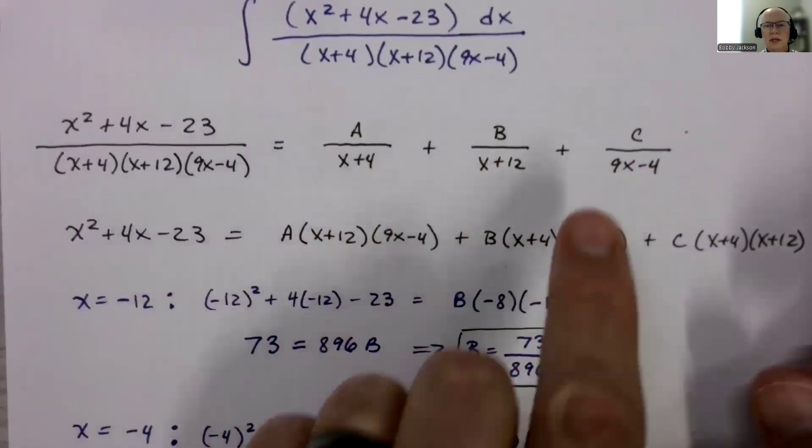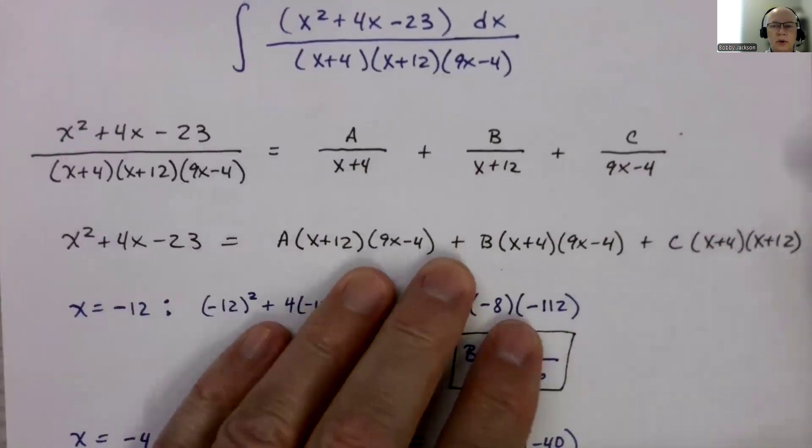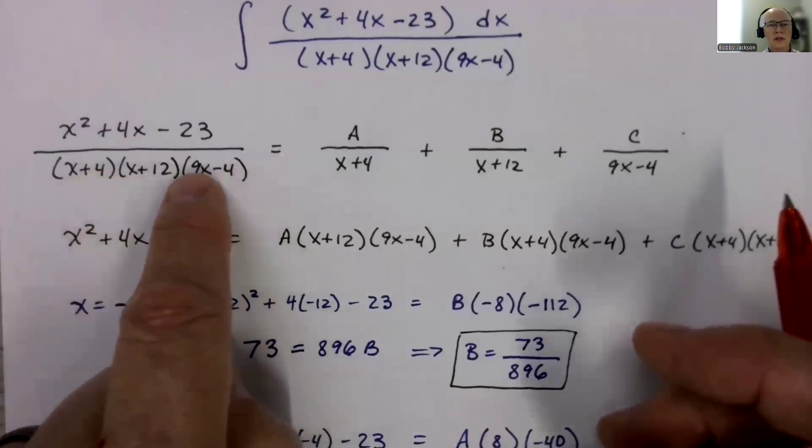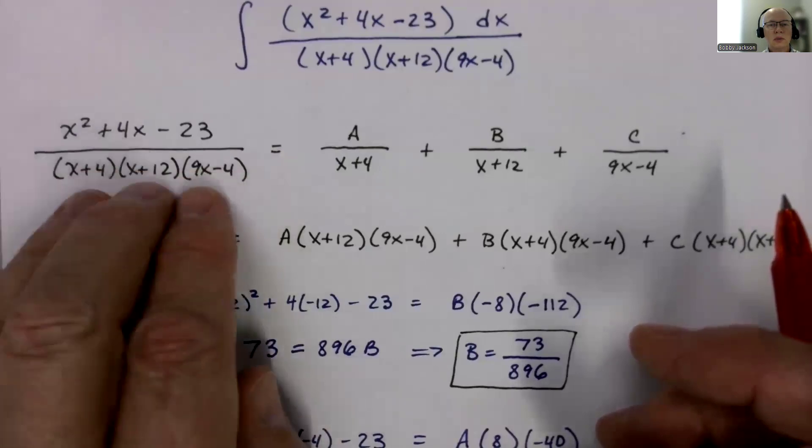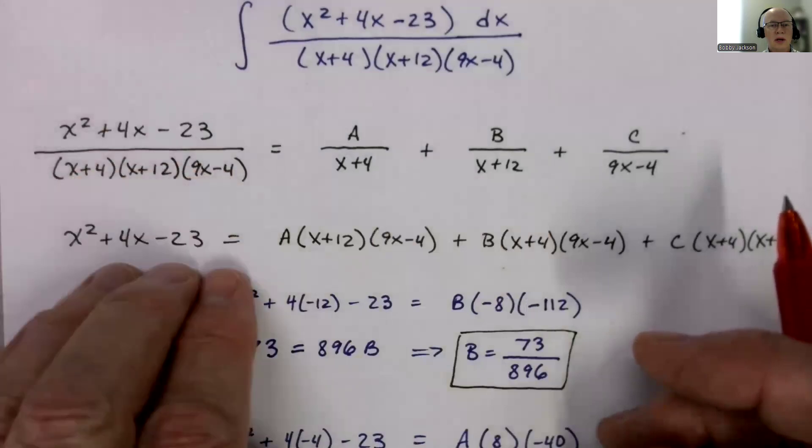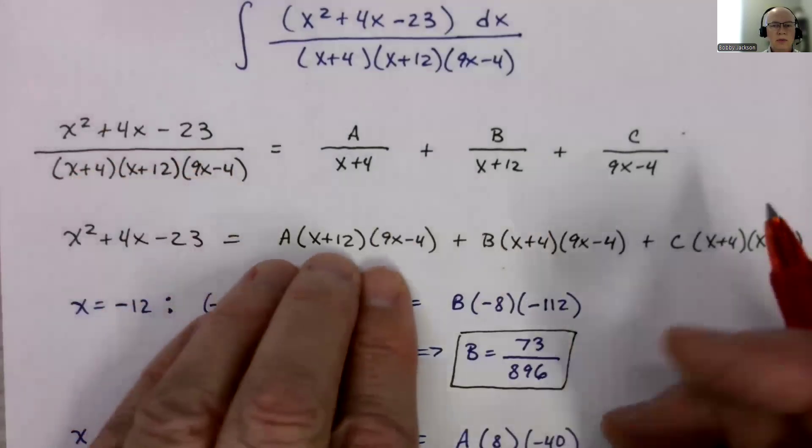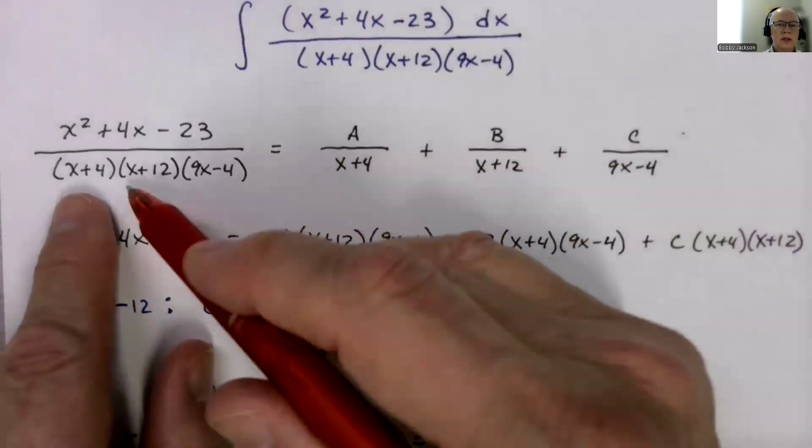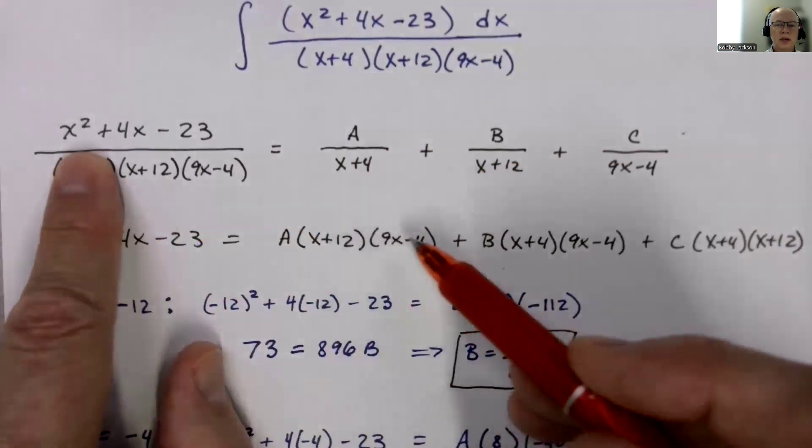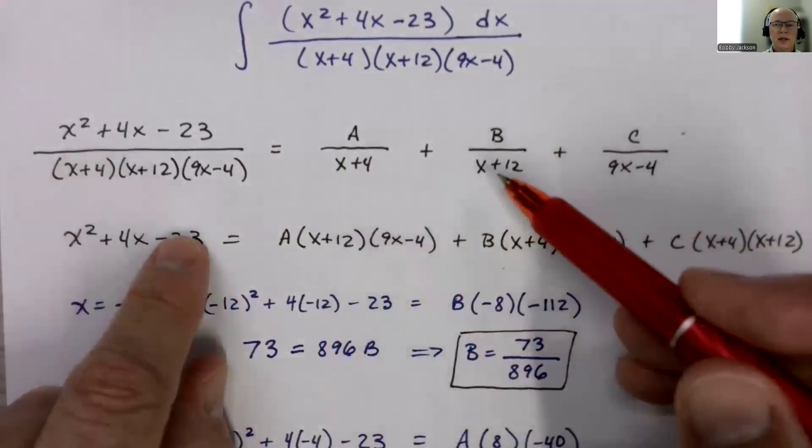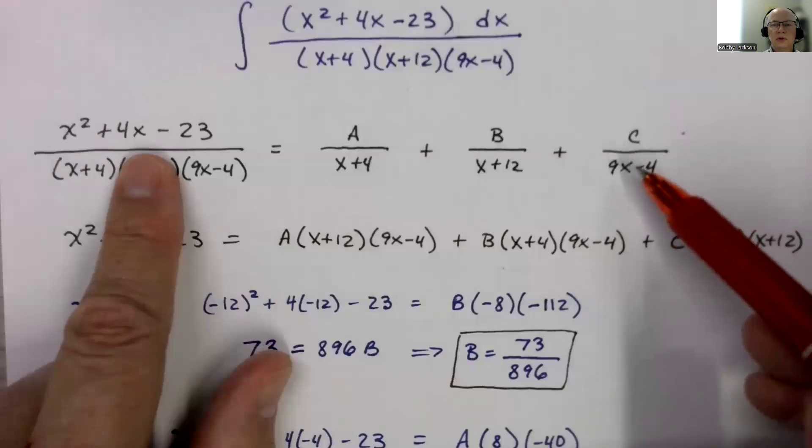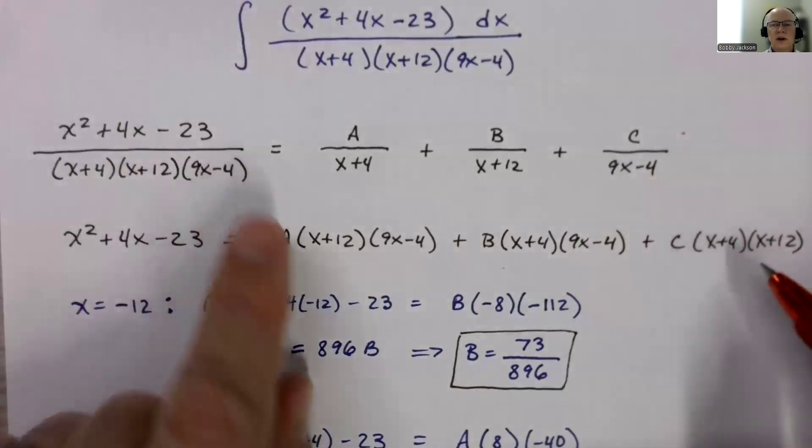So what I'm going to do is multiply by our least common denominator, which is just the product of these three binomials. So I'm going to multiply both sides of the equation by this. Of course, when I multiply this side by the denominator, I just get the numerator. When I multiply A over x plus 4 times this denominator, the x plus 4 cancels, leaving x plus 12 times 9x minus 4. When I multiply this fraction by it, the x plus 12 cancels, leaving the x plus 4 times 9x minus 4. And then here, similarly, the 9x minus 4 cancels, leaving these two factors.